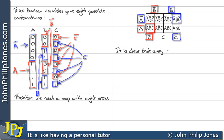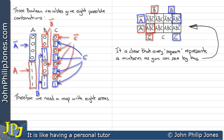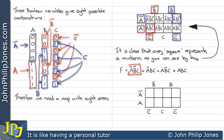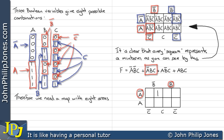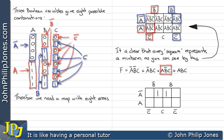Every square represents a minterm. Looking at this minterm here, we can see it is not A, not B and C, which is this area here, so we draw a 1 in this area. This minterm represents not A, B and C, which is this particular area here, so we draw a 1 in here. This minterm here is A, not B and C, which is this area, and we draw a 1 in there.